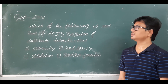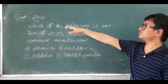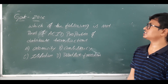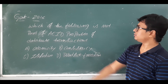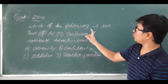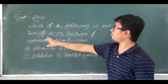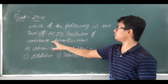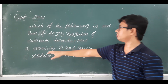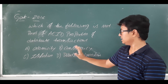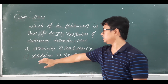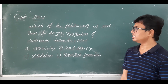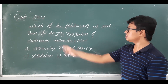Good morning students. Today we will discuss one of the GATE questions from 2016. The question is: which of the following is not part of ACID properties of database transactions? The four options given are atomicity, consistency, isolation, and deadlock freedom.